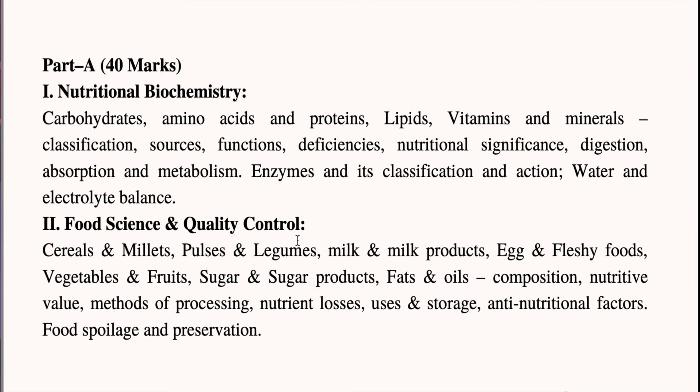The syllabus is divided into two parts: Part A for 40 marks and Part B for 60 marks. In Part A, the first unit is Nutritional Biochemistry, where you need to learn about all the nutrients and focus on deficiency, function, and metabolism, along with enzymes and their classification and action, and water and electrolyte balance.